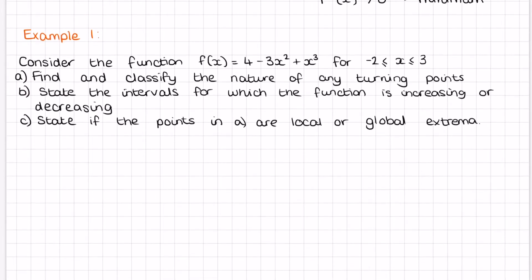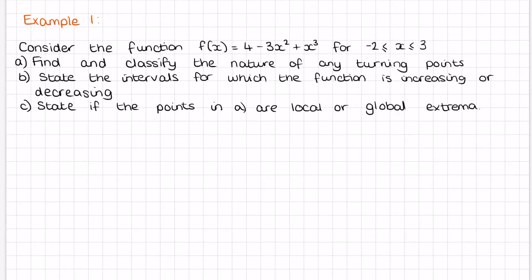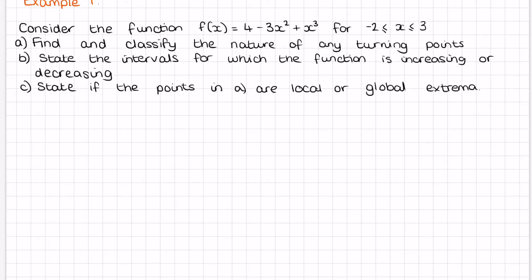For part A, when it says find and classify the nature of any turning points, I'm going to do this one with both the first derivative test and the second derivative test — you don't need to do both in a question, you can choose which you prefer. Part B asks us to state the intervals for which the function is increasing or decreasing, and then part C we find any local or global extrema. The function we're looking at is 4 minus 3x squared plus x cubed, and we're only looking at the graph between negative 2 and 3.